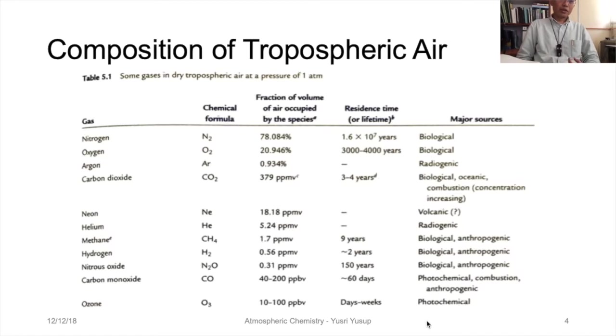The sources of carbon dioxide are more varied. It comes from biological sources, oceanic sources, and also combustion. When we burn fossil fuel or organic material, the combustion process releases carbon dioxide gas.